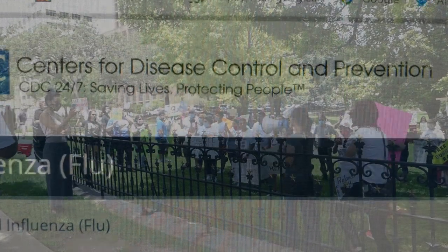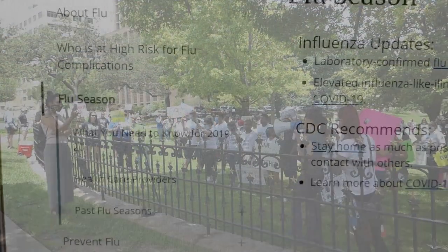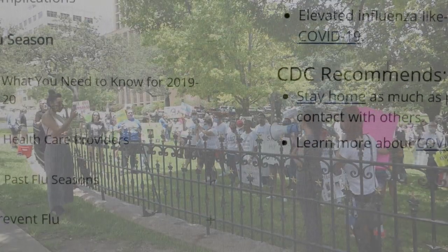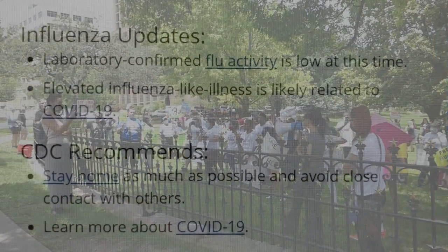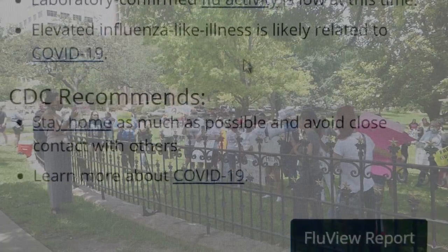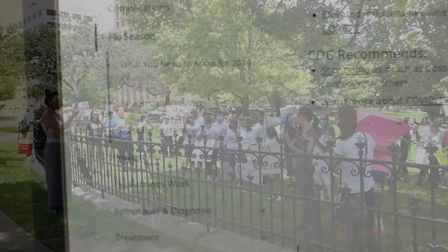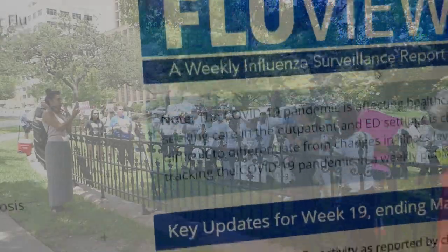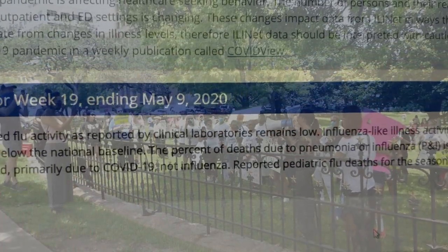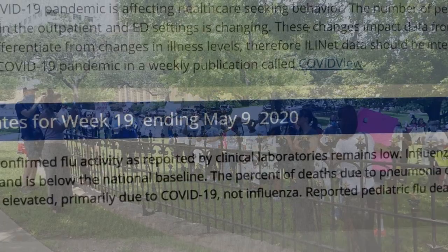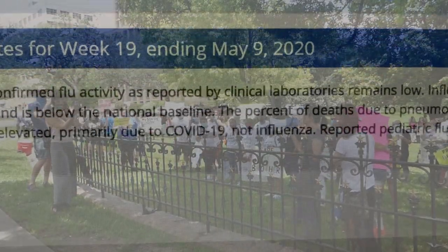Okay, here we are at the CDC site as of May 21, 2020. What we need to know about 2019 to 2020: laboratory confirmed flu activity is very low at this time. Elevated influenza-like illness is likely related to COVID-19. CDC recommends staying home as much as possible and avoiding close contact with others. Laboratory confirmed flu activity, as reported by clinical laboratories for the week ending May 9th, remains low. Influenza-like illness activity continues to decrease and is below the national baseline.